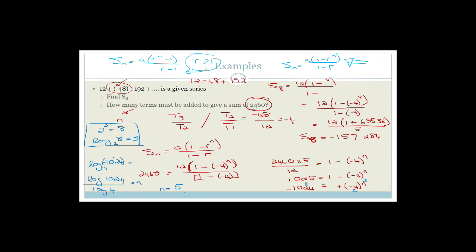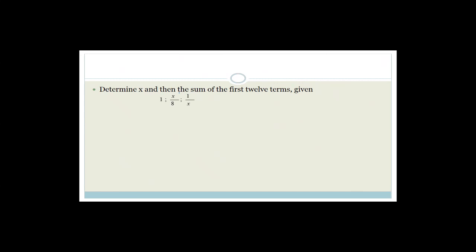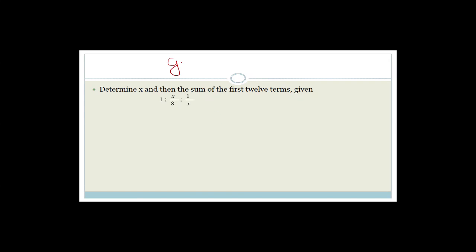Now it says determine x and then the sum of the first 12 terms, given the sequence 1, x over 8, and 1 over x. They don't tell you if it's a common ratio or common difference, but since we're in the GP section, this is a GP.